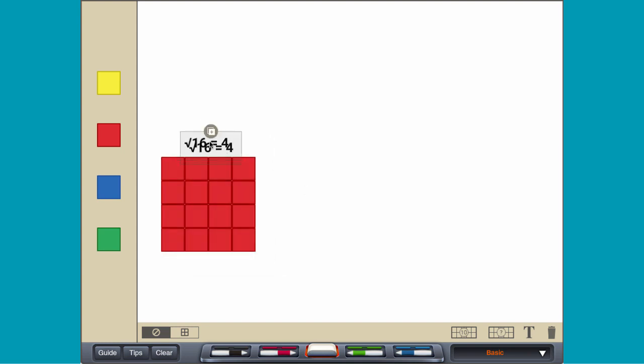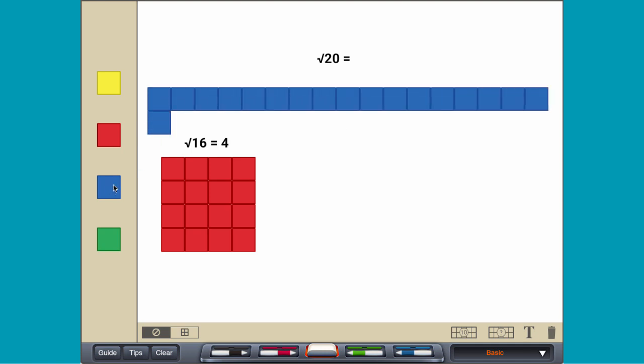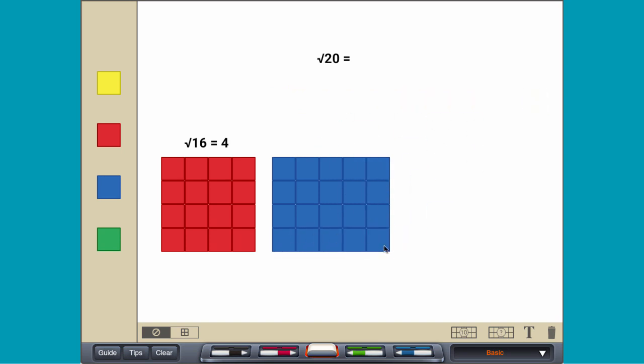To find the square root of 20, try to make a square using 20 tiles. Since 20 tiles cannot form a square, the number 20 is not a perfect square.